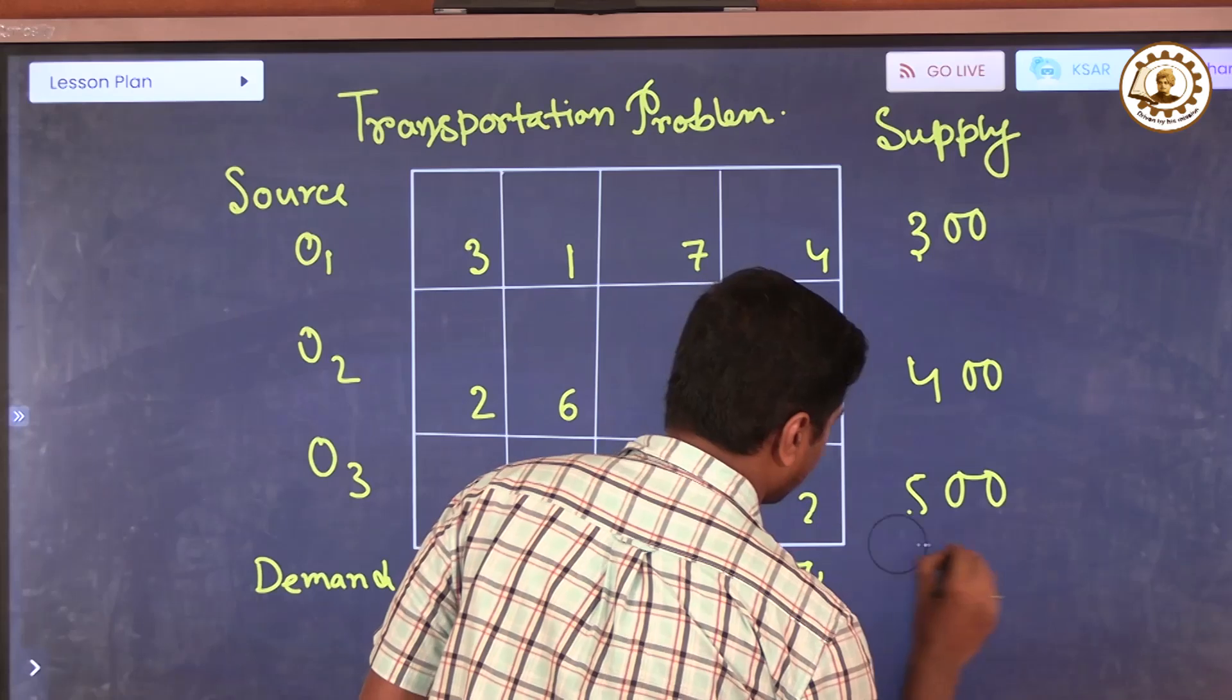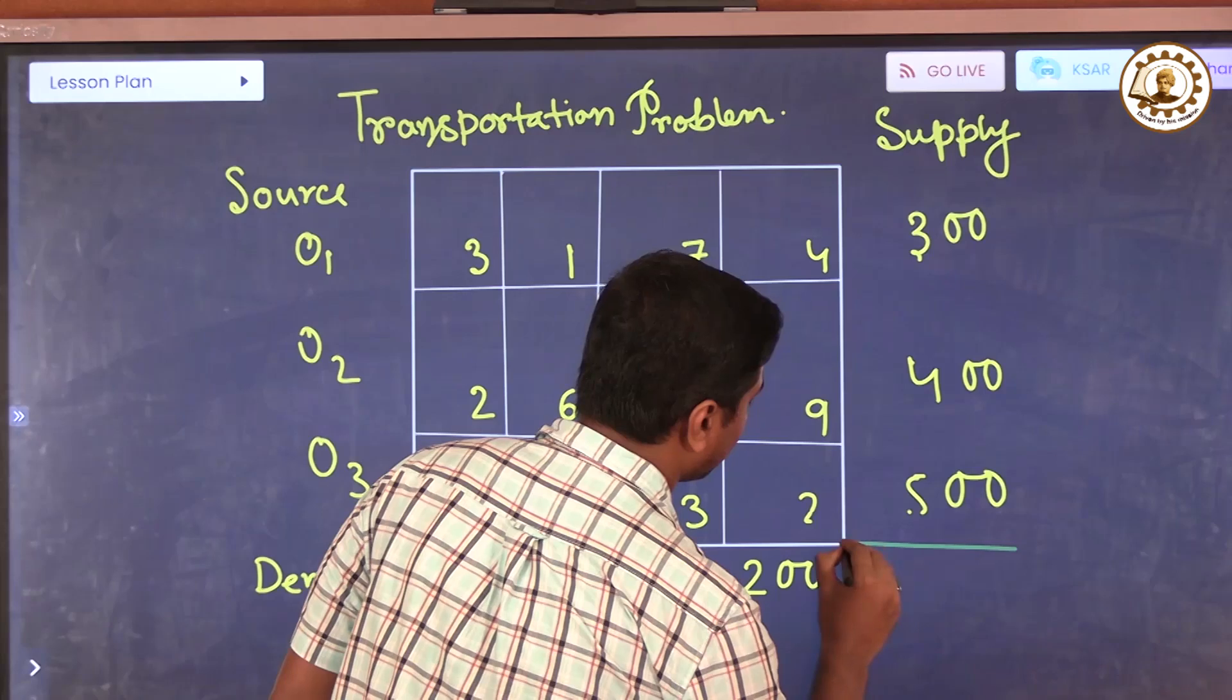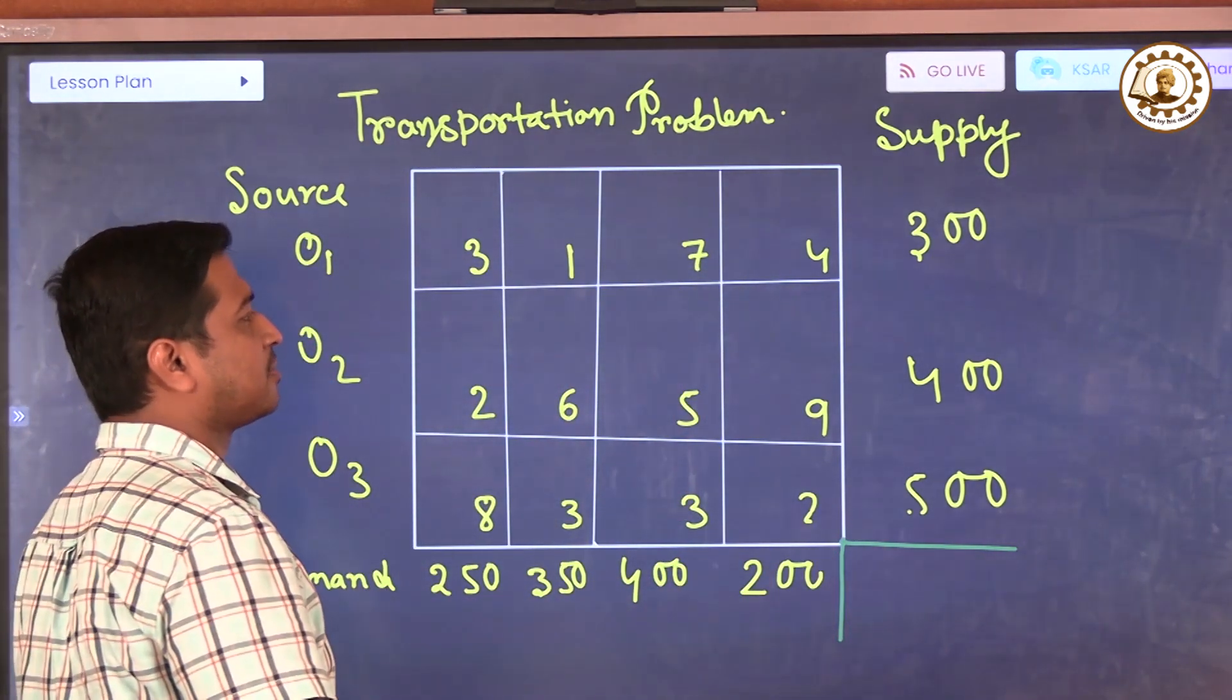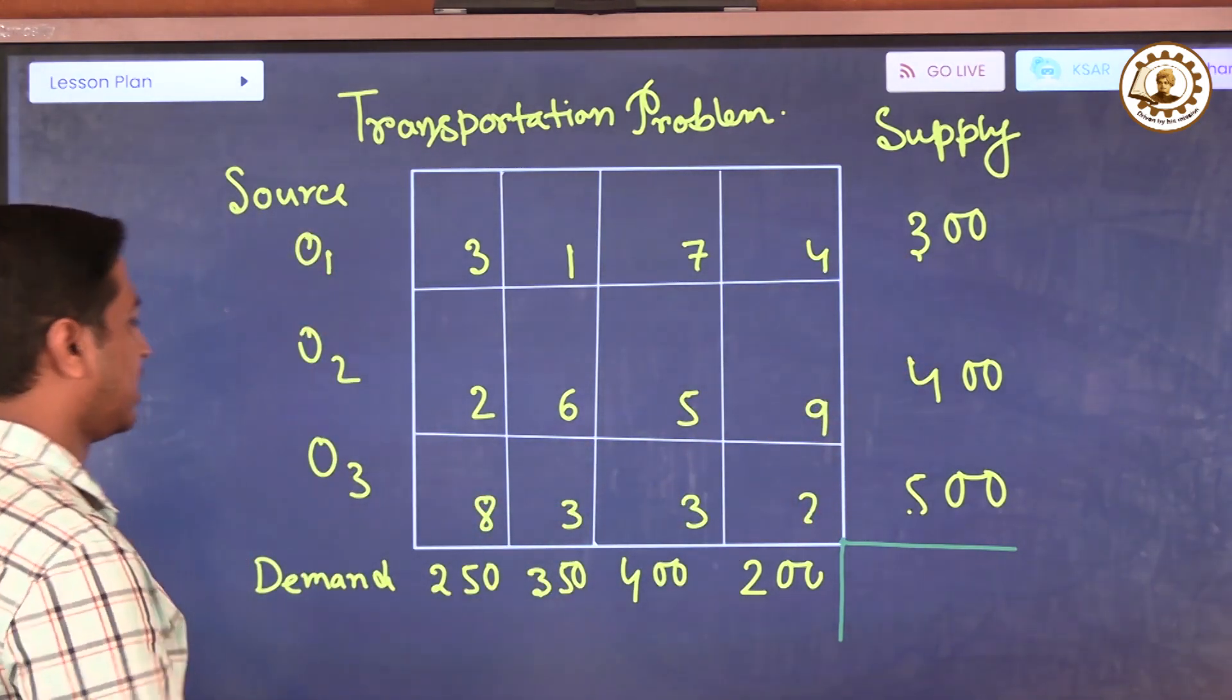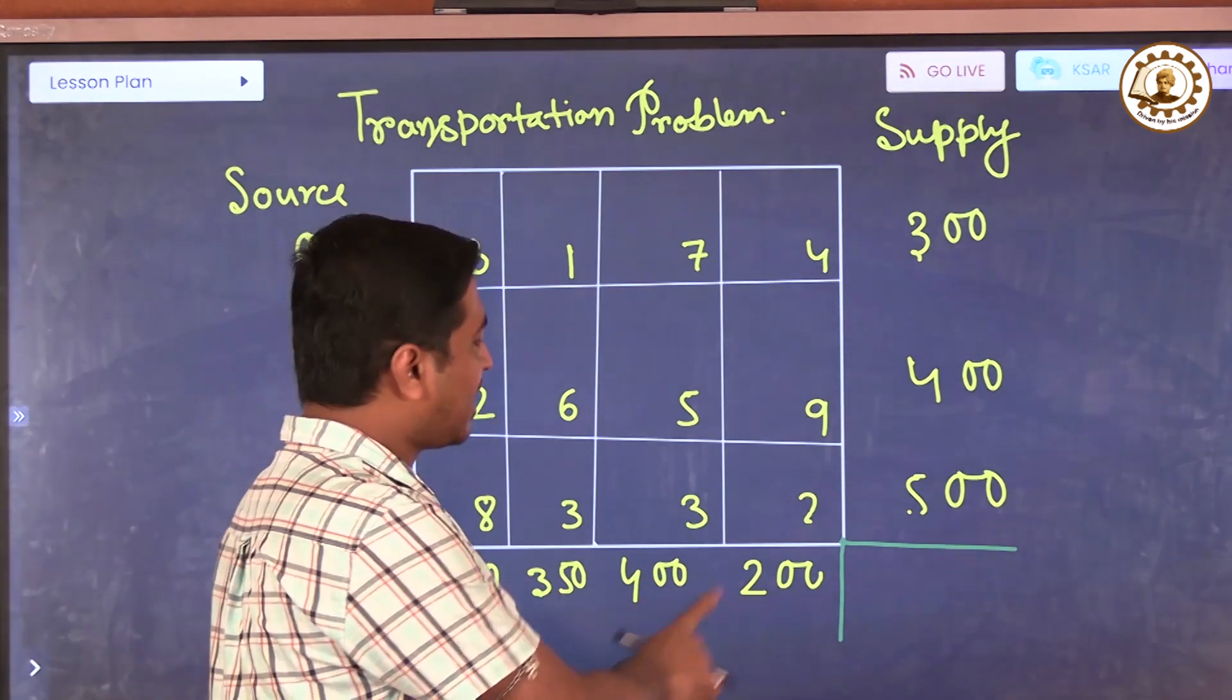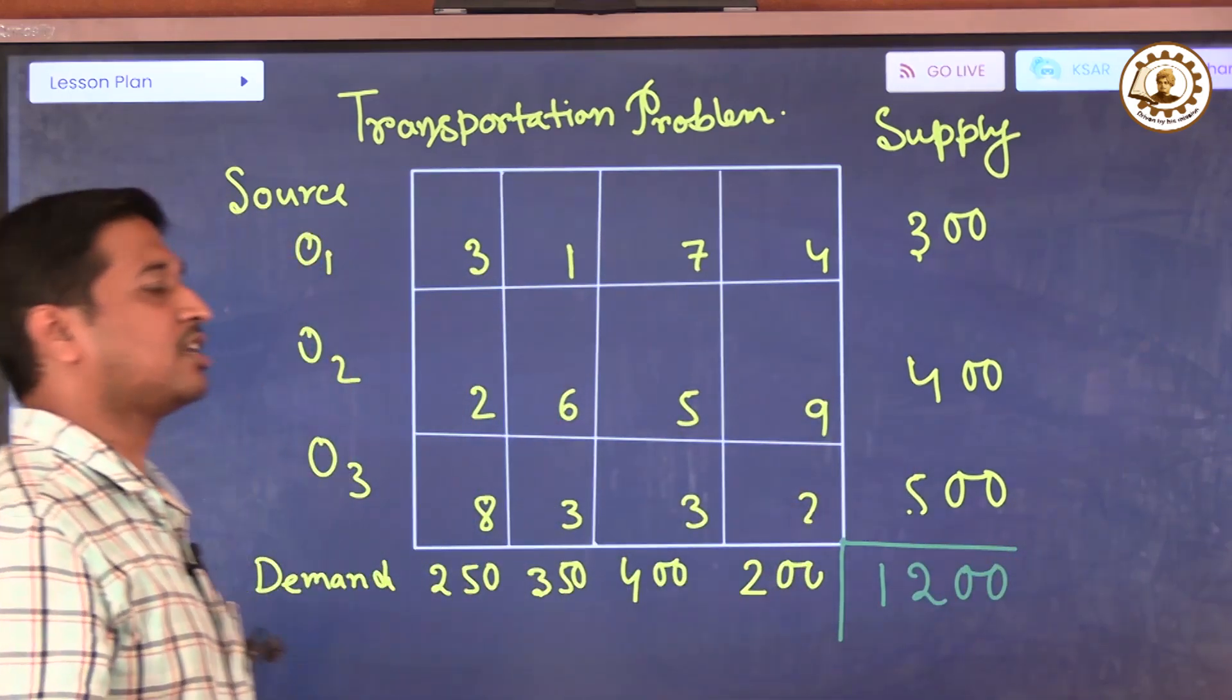Where demand is specified and supply is also specified. Now we check, is this a balanced transportation problem or unbalanced transportation problem? We can see that 300, 400, and 500 equals 1200. And the demand is 250, 350, 400, and 200, that is 1200. So this is a balanced transportation problem.